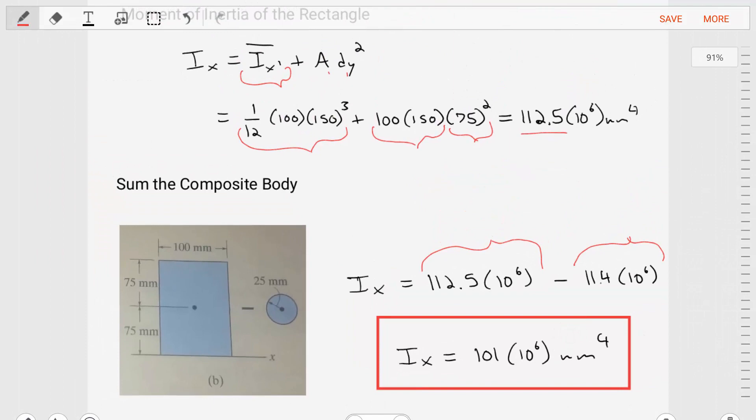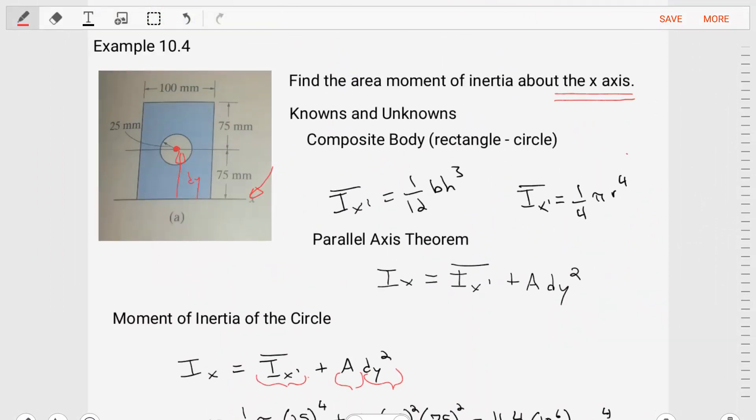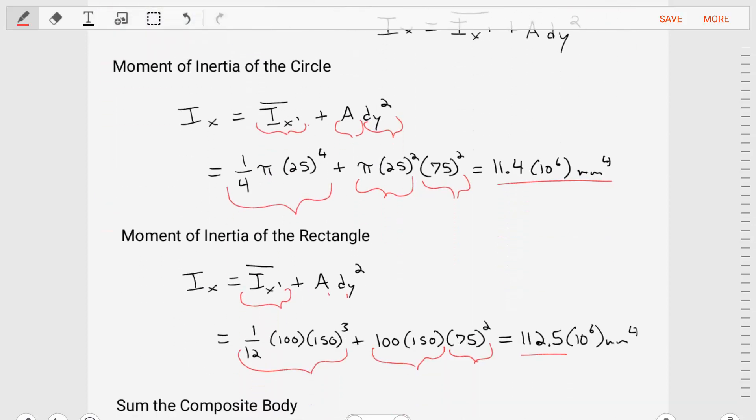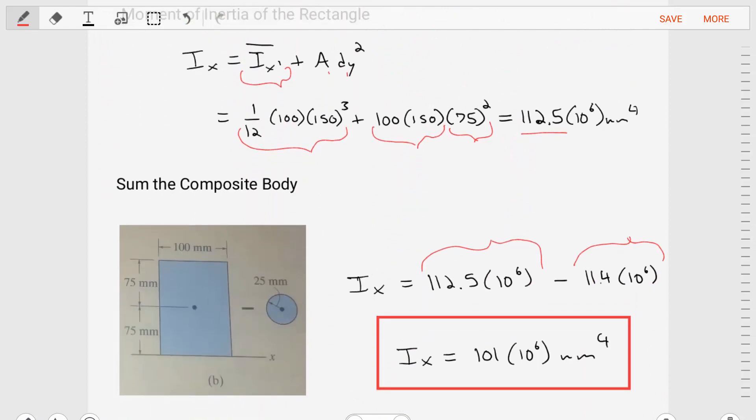In solving this problem, what did we have to do? Really, we had to analyze the diagram and figure out what structures we were dealing with and recognize that the parallel axis theorem needed to be applied. Then we did the math and then just summed everything together.